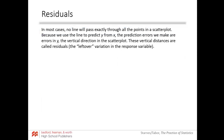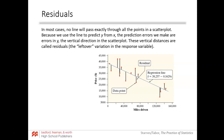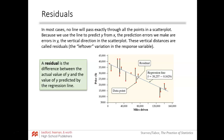Now the idea of residuals. In most cases no line will pass through all the points on the scatter plot unless you have an absolutely perfect fit, which typically doesn't happen. Because we use the line to predict y from x, the prediction errors we make are errors in the y or vertical direction of the scatter plot. These vertical distances are called residuals — the leftover variation in the response variable. The residual is the difference between the actual value and the predicted value: actual minus predicted.